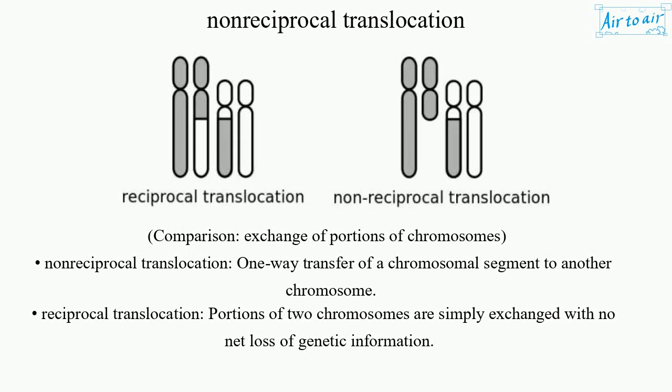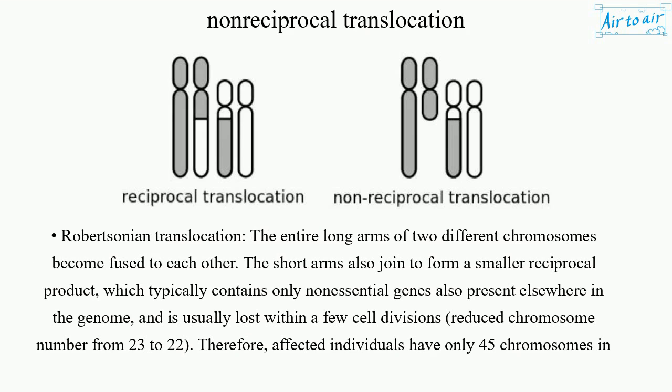Comparison of translocation types: Non-reciprocal translocation involves a one-way transfer of a chromosomal segment to another chromosome. Reciprocal translocation involves portions of two chromosomes being simply exchanged with no net loss of genetic information. Robertsonian translocation involves the entire long arms of two different chromosomes becoming fused to each other.